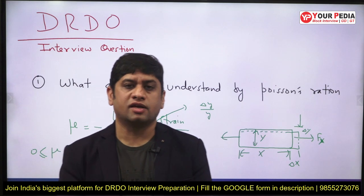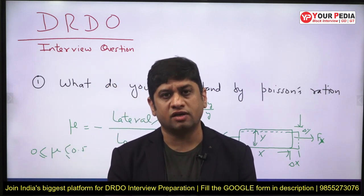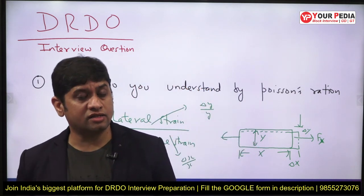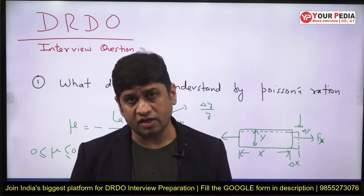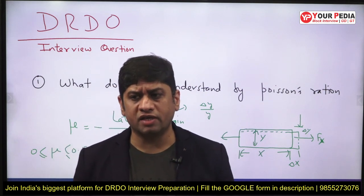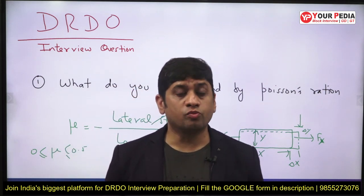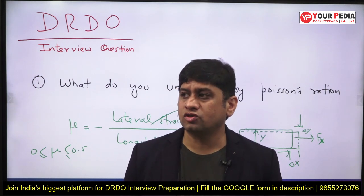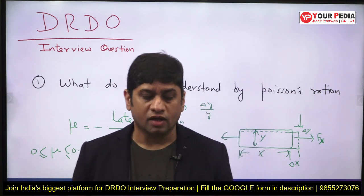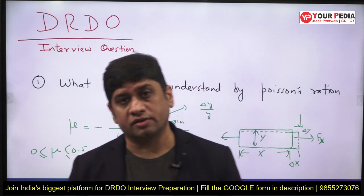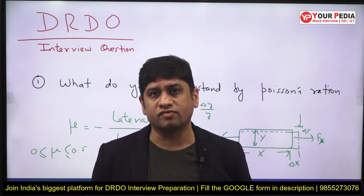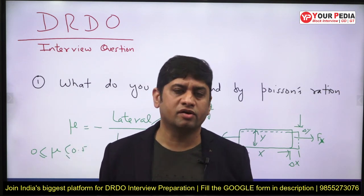This video is related to interview questions in DRDO — what kind of questions you can expect. This video is for mechanical and civil engineers, and the topic is strength of materials. In DRDO interviews you need to score a minimum of 70% to pass. They start with simple questions and keep increasing the depth, checking your overall understanding of the topic.